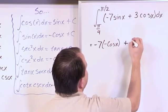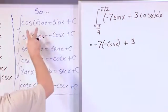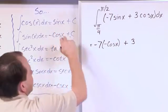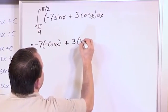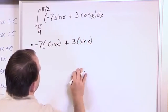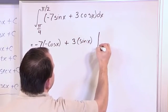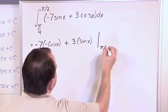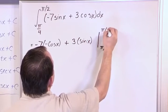Plus here we have a 3, so that's going to stay there. What is the integral of cosine? Integral of cosine is sine. So we're going to have sin(x). Now we don't need a constant of integration because this is a definite integral evaluated from π/4 to π/2.